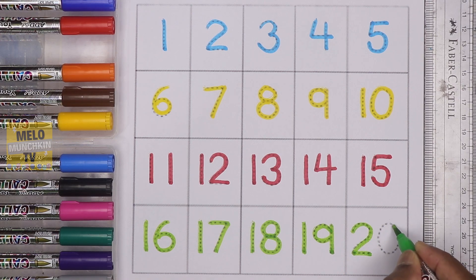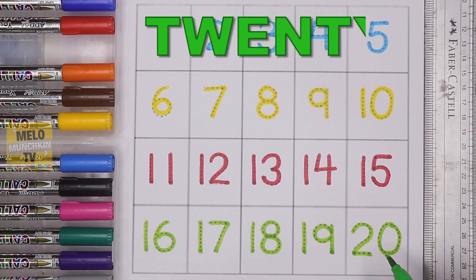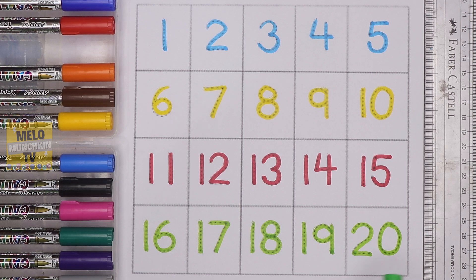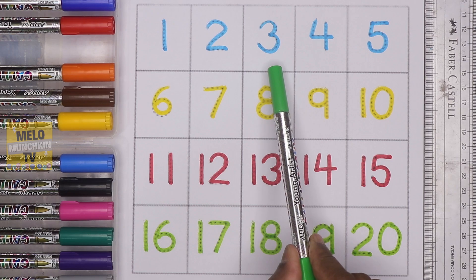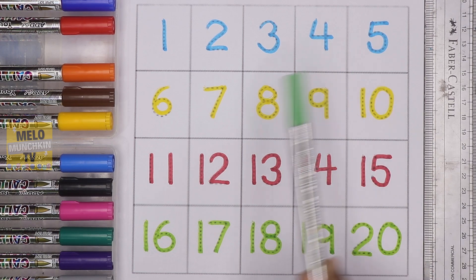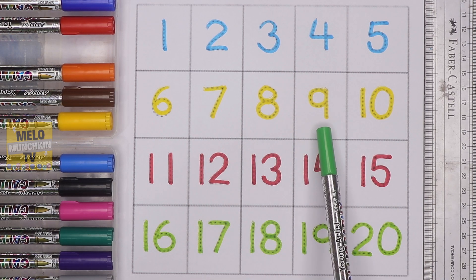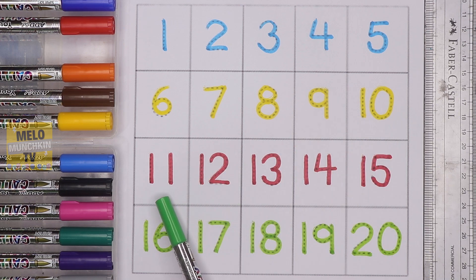Finally, after 19 it is 20, two-zero, 20. Its spelling is T-W-E-N-T-Y, 20. So we have completed our numbers from 1 to 20. Let's repeat once again: one, two, three, four, five, six, seven, eight, nine, ten, eleven...